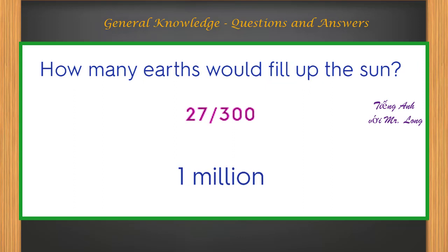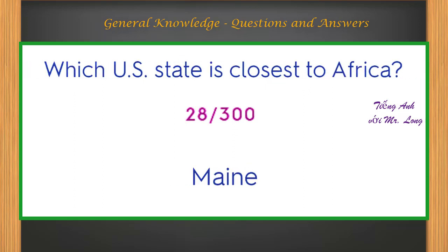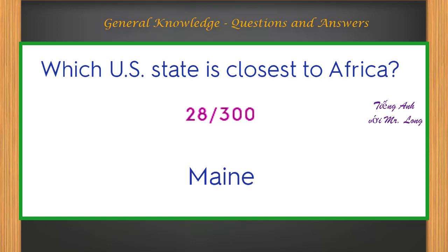How many Earths would fill up the Sun? 1 million. Which U.S. state is closest to Africa? Maine.